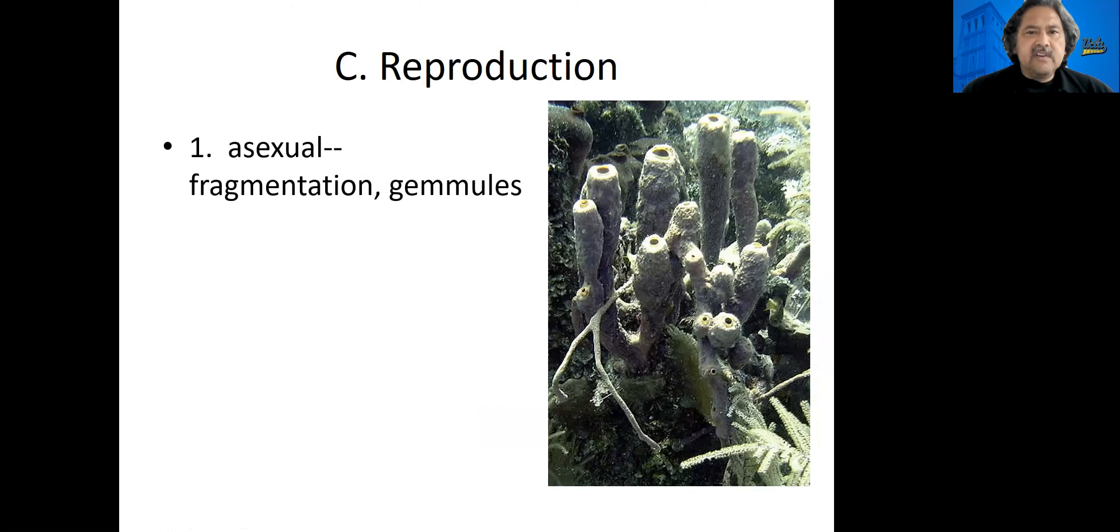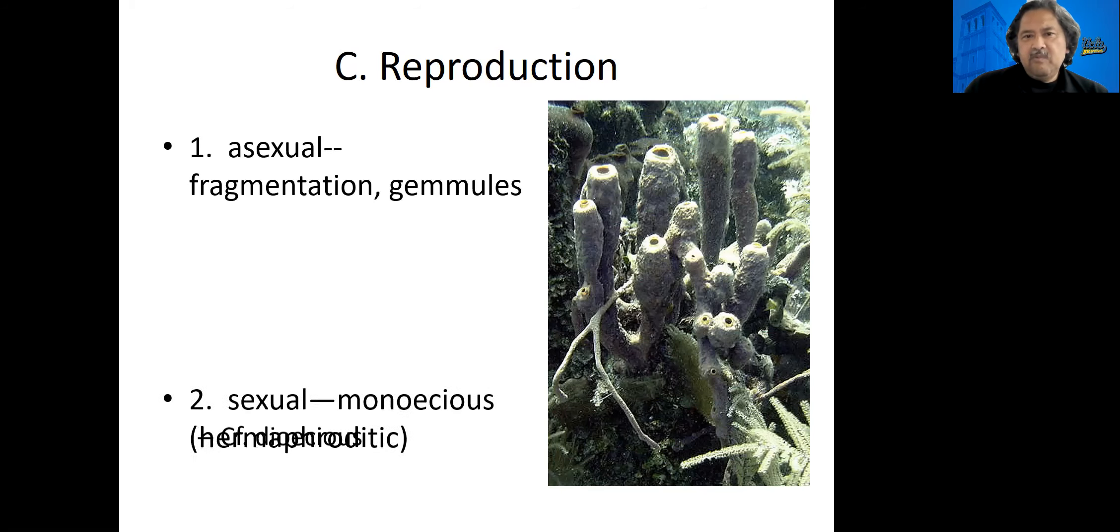Now as far as reproduction goes, these guys are asexual. Parts can fall off and then grow into a new sponge, it's called fragmentation, but also they can form gemmules. The gemmule is a specialized cell that has some amoeboid cells in it, and those go off and most of those don't do anything, but the gemmules that land in a more favorable condition can grow into a new sponge. It's almost like an escape pod that ensures that the sponge in one form will live on.